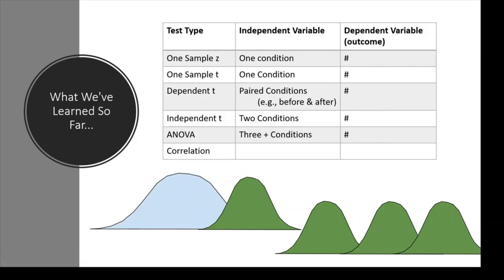What we haven't done is look at how numbers predict numbers. For example, how tall you are and how that predicts your income. If I let your height be the number it naturally is, I can see if it predicts your income without putting you into groups. I could categorize you as short versus tall, but by chopping numerical information into groups, I've eliminated a lot of useful data. With correlation, we let the numbers vary naturally to see how they predict other numbers.